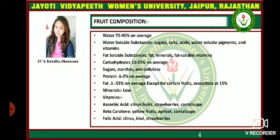Regarding fruit composition, the water inside a fruit is 75–90% on average. Water-soluble substances include sugars, salts, acids, water-soluble pigments, and vitamins. Fat-soluble substances include fats, minerals, and fat-soluble vitamins. Carbohydrates are 10–25% on average, including sugars, starch, and cellulose. Proteins are 0.6–2% on average, and fat is 0.1–0.55% on average, except for certain fruits — for example, avocado has 15% fat.